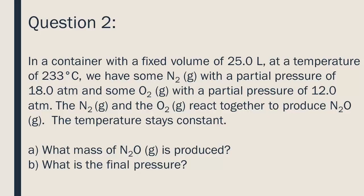Stoichiometry. A second example of a stoichiometry question, this time with gases. In a container with a fixed volume of 25 liters at a temperature of 233 degrees Celsius, we have some N2 with a partial pressure of 18 atmospheres and some O2 with a partial pressure of 12 atmospheres. The N2 and O2 react together to produce N2O. The temperature stays constant.